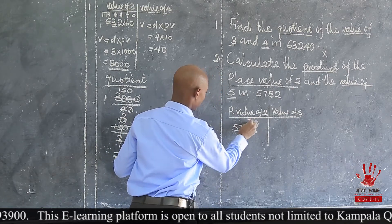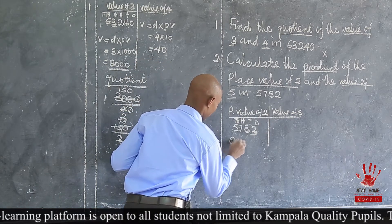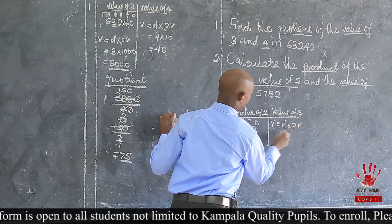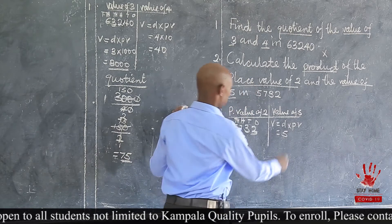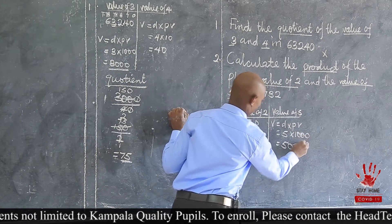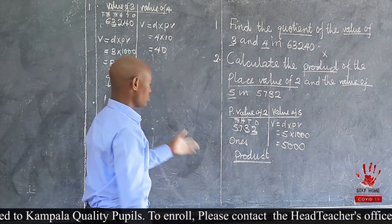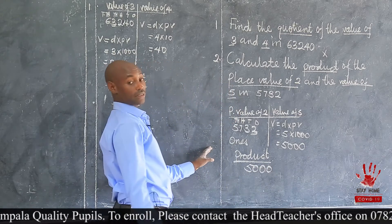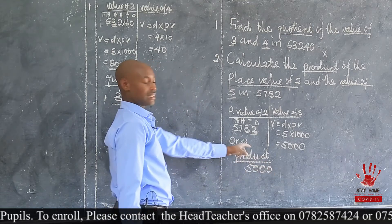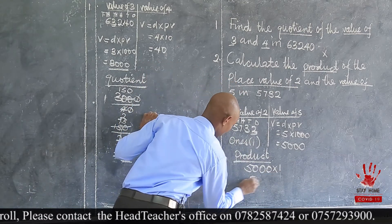The place value: ones, tens, hundreds, then thousands. What is the place value of 2? The place value of 2 is 1. What is the value of 5 in the same number? Value is equal to digit times the place value. The digit is 5 and the place value is 1,000. So multiplied by 1,000, which gives you 5,000. But the question is demanding the product. Product means the number you get after multiplying. So it is 5,000 times the place value of 2, which is 1. Any number times 1 gives that same number. So the product is 5,000.